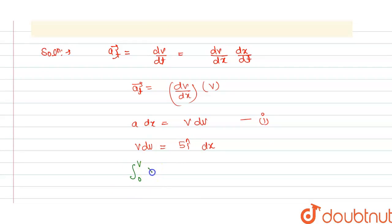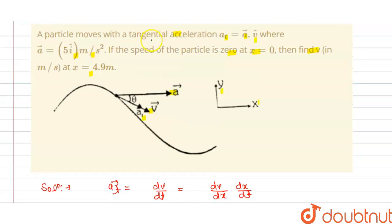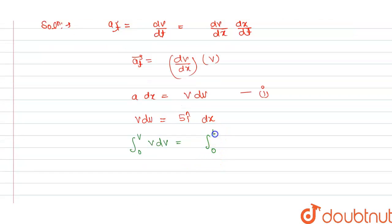We can write here, this is 0 to v, and this is ∫v dv, and this is 0 to 4.9 meters, and this is ∫5 dx.